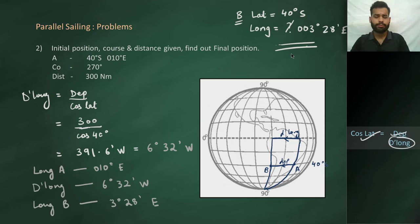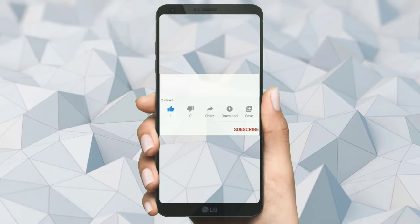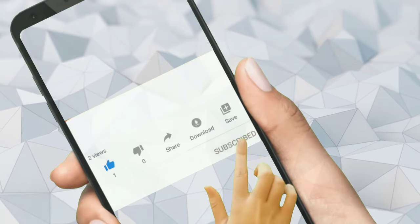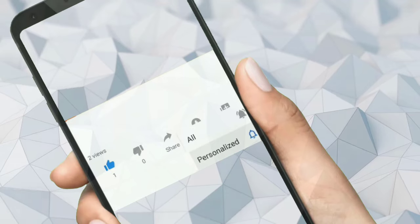There are just four simple steps to solving parallel sailing problems: first, analyze what is given; second, draw the rough diagram; third, apply the formula; and fourth, get the answer. This is how you can easily solve parallel sailing questions. Please like this video, share it with your friends, and hit the subscribe button and bell icon to never miss a new informative video from our channel.